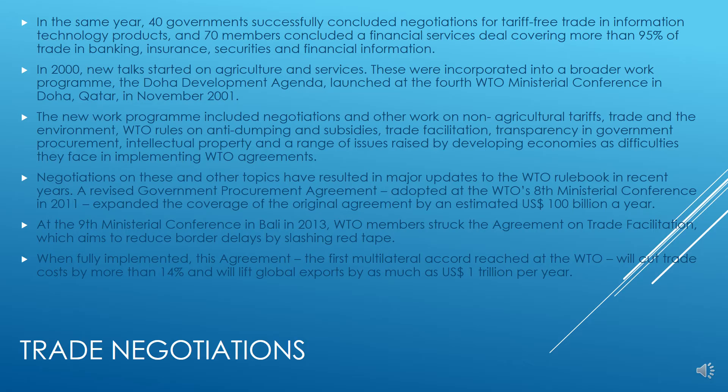The new work program included negotiations and other work on non-agricultural tariffs, trade and the environment, WTO rules on anti-dumping and subsidies, trade facilitation, transparency in government procurement, intellectual property, and a range of issues raised by developing economies. Negotiations on these topics resulted in major updates to the WTO rulebook. A revised Government Procurement Agreement adopted at the WTO's eighth Ministerial Conference in 2011 expanded the coverage of the original agreement by an estimated 100 billion US dollars a year.